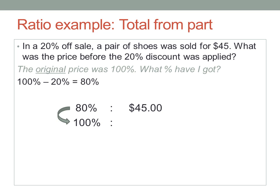So, how do I convert 80 into 100? Multiply by the new number over the old number: 100 divided by 80.